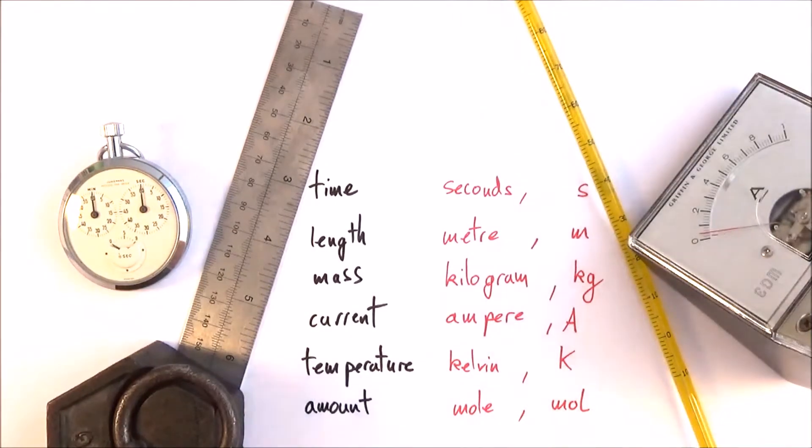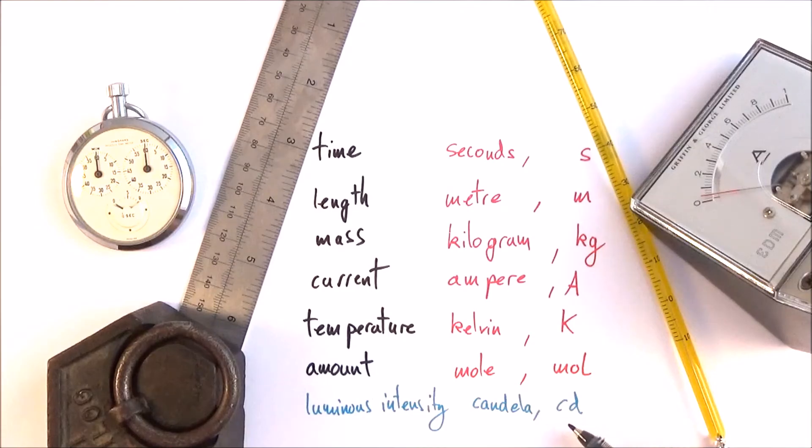The very final thing is luminous intensity, measured in candela, CD. This never comes up in A-level physics. It might only come up when you study physics at university.